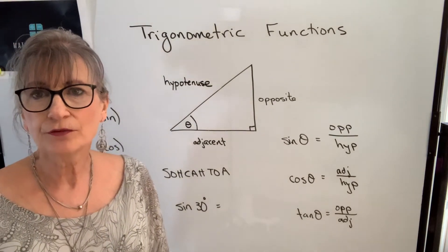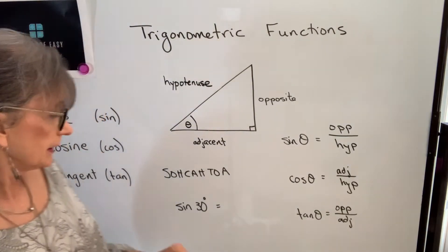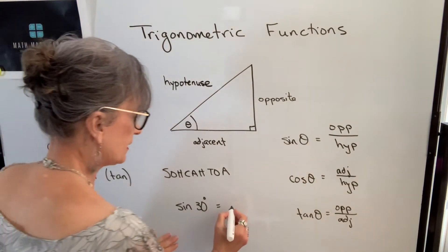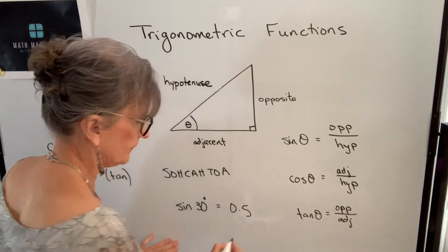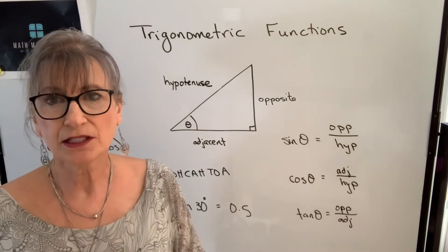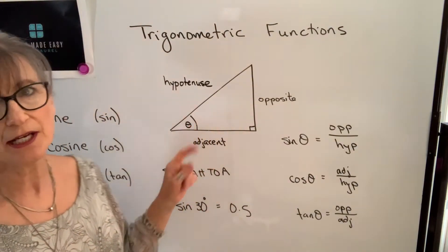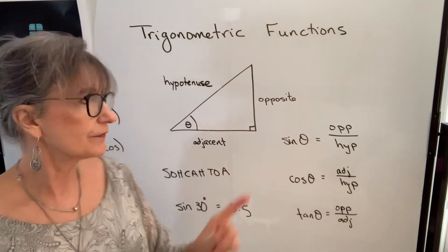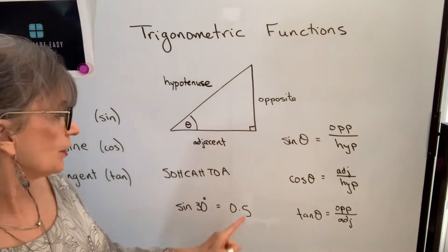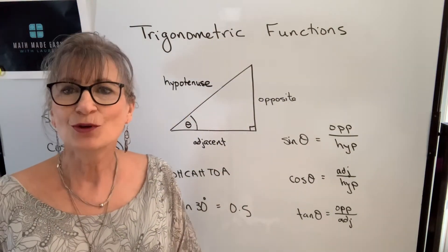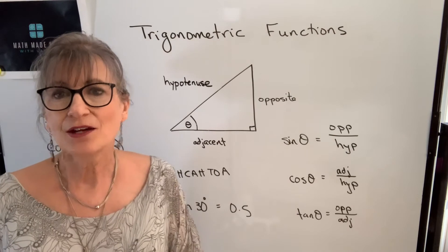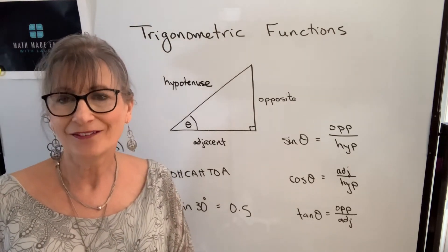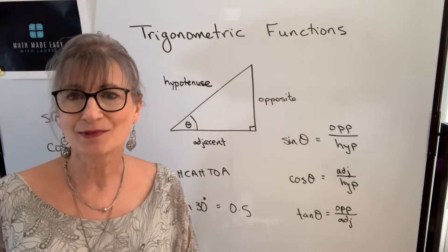Our calculators can find all of these trig functions for any angle. For example, if we punched in sine of 30 degrees, we should get 0.5. What that means is in any right triangle where you have a 30 degree angle — it can be large, it can be small, it doesn't matter — the ratio of the opposite side to the hypotenuse will always be 0.5. So knowing these trig functions, we are going to be able to find an unknown side if we know one side and the angle. Let's take a look at some examples.